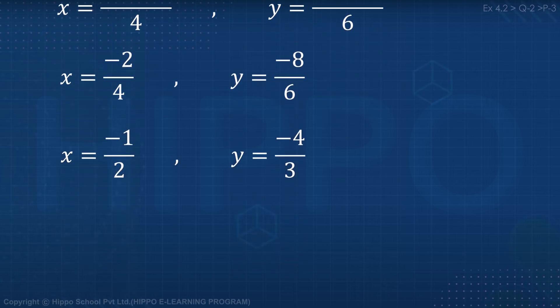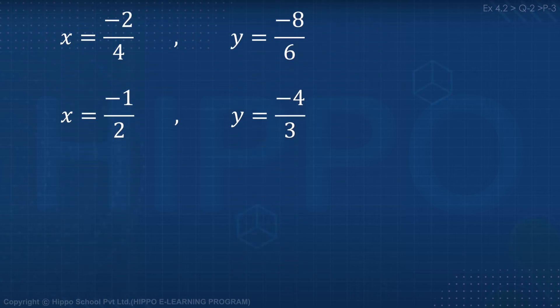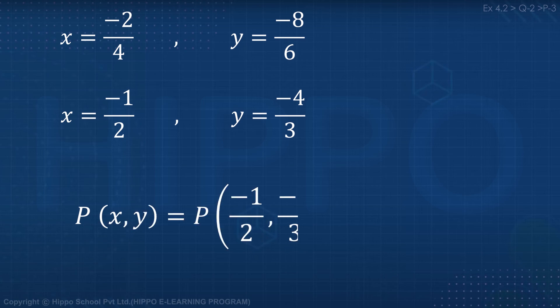So two values are cancelled. The point P in terms of small x and small y equals: small x is minus 1 by 2, small y equals minus 4 by 3.